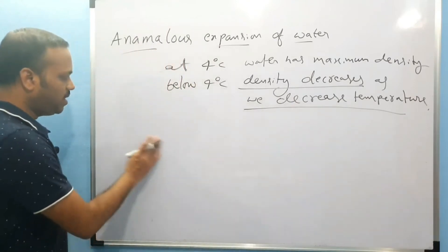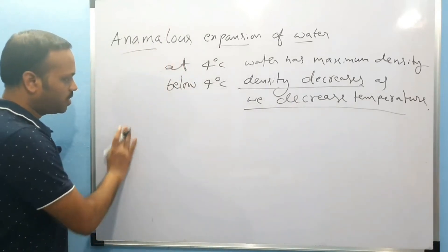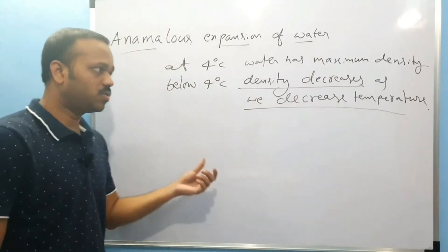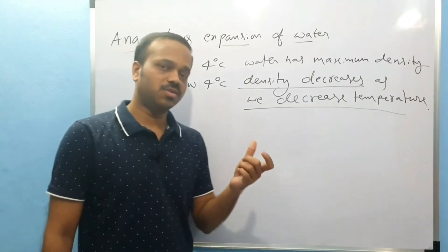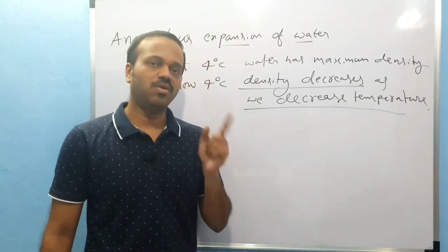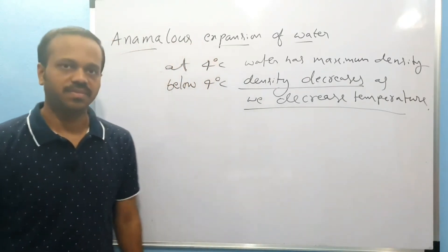This is anomalous expansion. The density of water below 4 degrees decreases as we decrease the temperature. This is what we call anomalous expansion of water. Life on earth exists because of this behavior.